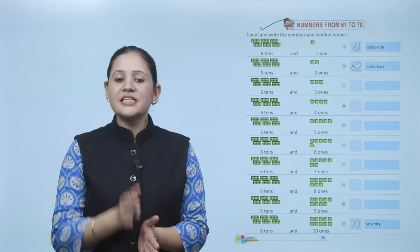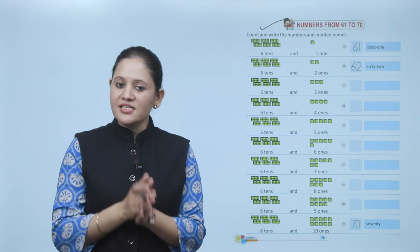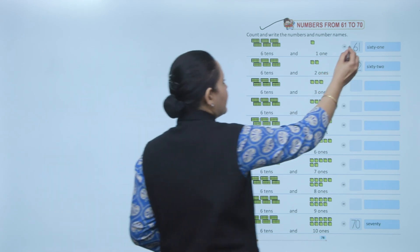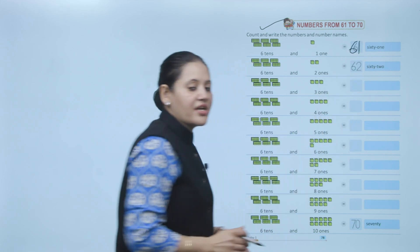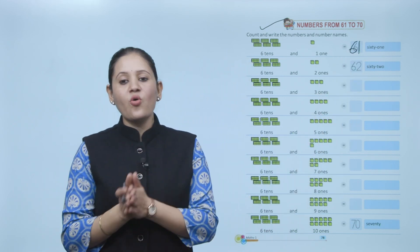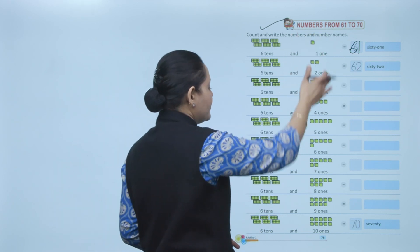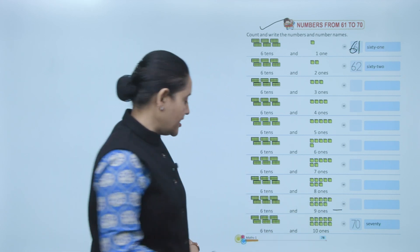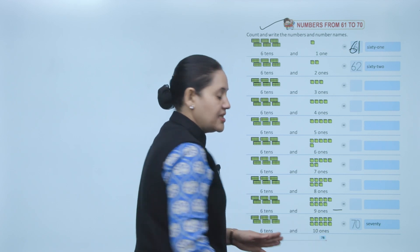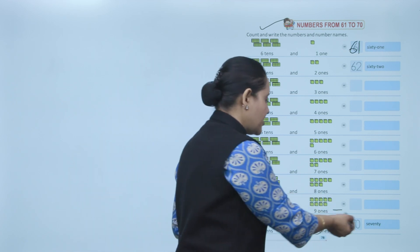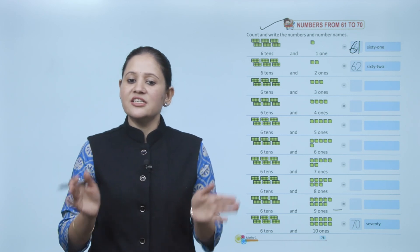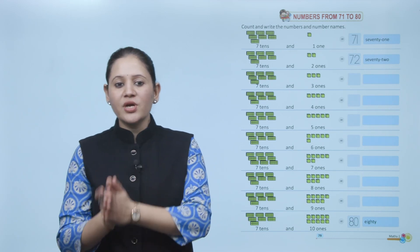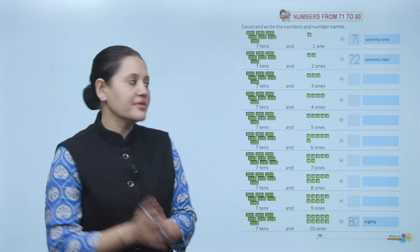Like this you can write numbers up to 69. Then comes 70: 7-0. That means 6 tens and 10 ones — 60 plus 10 makes 70. S-E-V-E-N-T-Y. Next, numbers from 71 to 80. Count and write the numbers and number names.